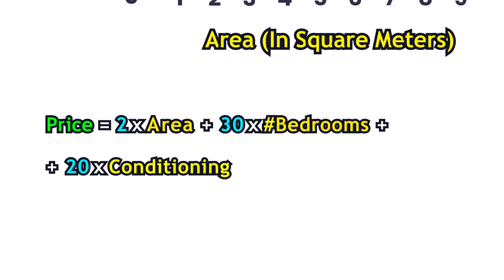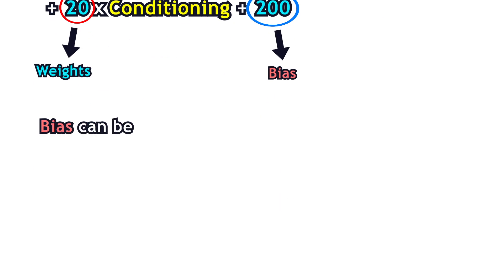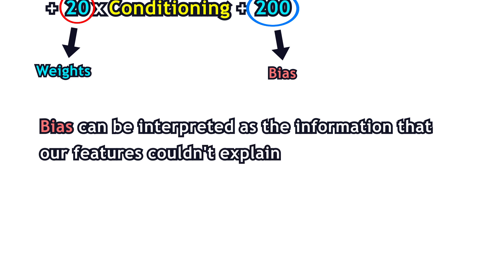Additionally, linear functions have an intercept term. In linear regression, the coefficient is called the weight and the intercept is called the bias. Bias can be interpreted as information that our features couldn't explain.